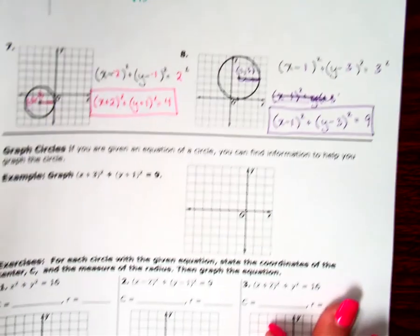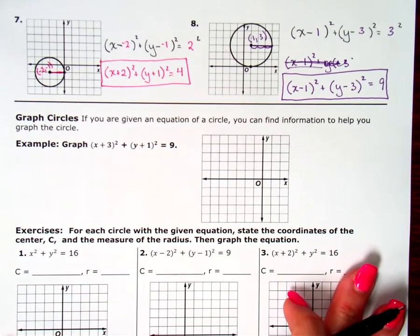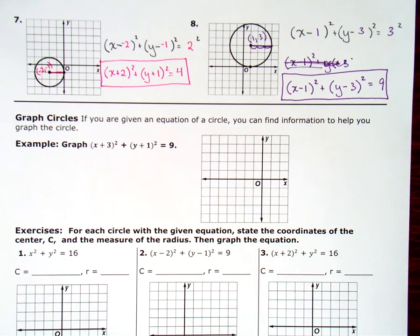Let's look at what happens if instead of having me write the equation, they've given me the equation and I need to work backwards to figure out what is the center and what is the radius so I can try to graph that circle.